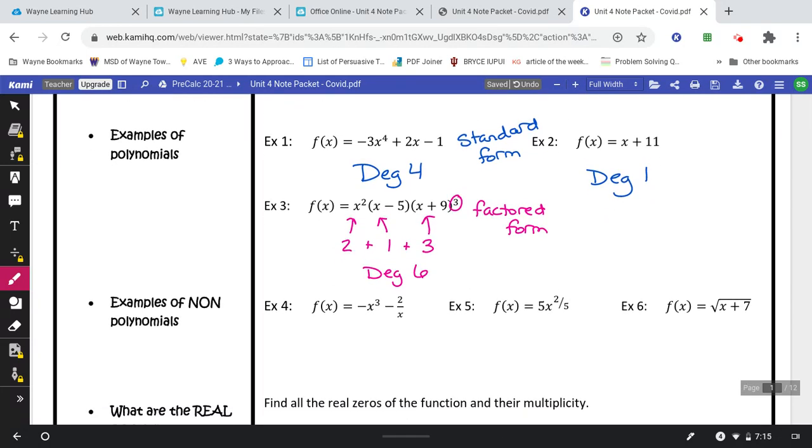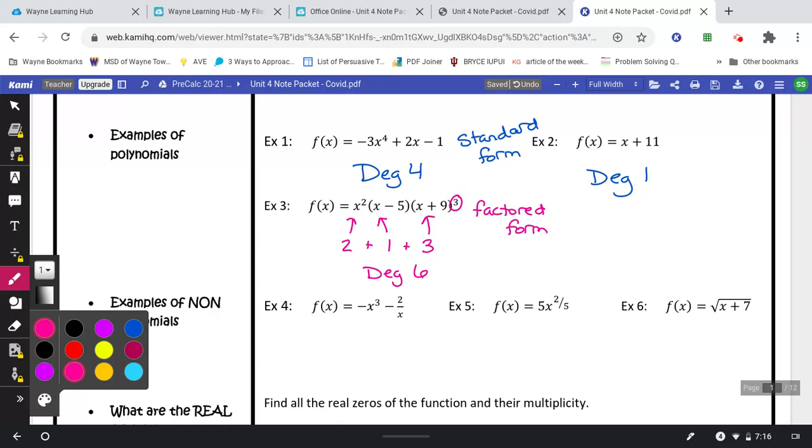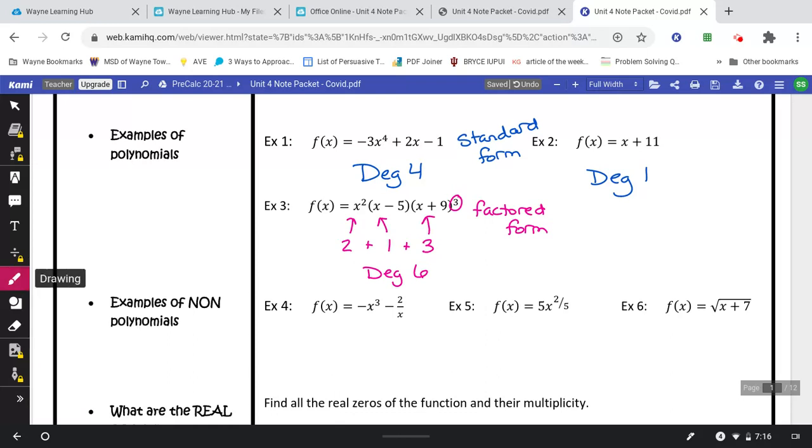The next three examples are things that are not polynomials. So we'll talk quickly about why each one is not a polynomial. This first one here, when you have an x in the denominator, it's not a polynomial. No x is in denominator. Essentially that's like having x to the negative 1 power, and we have to have non-negative exponents.